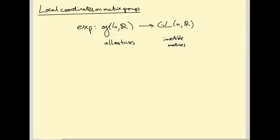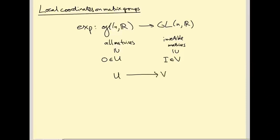The exponential map goes from little gl_n(R), the set of all n×n matrices, to big GL_n(R), the set of invertible matrices. This map is not globally invertible, but there is a local inverse: a neighbourhood U inside little gl_n containing the zero matrix, and a neighbourhood V inside big GL_n containing the identity, such that the exponential map restricted to U lands in V and gives a bijection. The inverse is called the logarithm. Both maps are smooth — it's a local diffeomorphism.